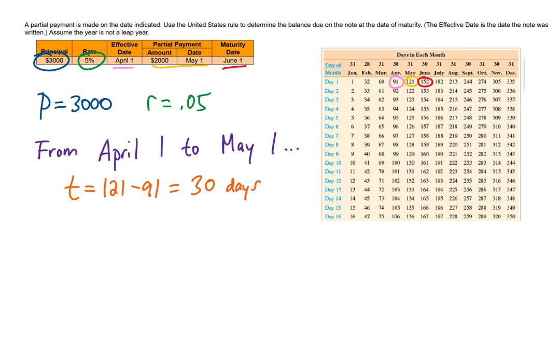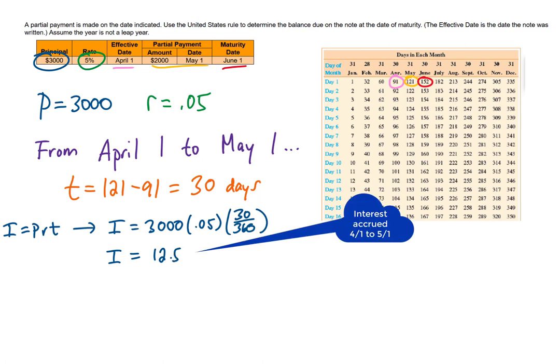There were 30 days between the beginning of this loan and when you made a payment. In those 30 days, let's find out how much interest accrued. Using our simple interest formula, we know that 30 days is 30 over 360 years. That gives us a total interest accrued of $12.50. Now, we're going to pay $2,000 towards this loan. According to the United States rule, if we make a partial payment on a loan, we need to pay the interest that accrued first, and then the rest of the money from that partial payment goes towards reducing the principal of the loan.